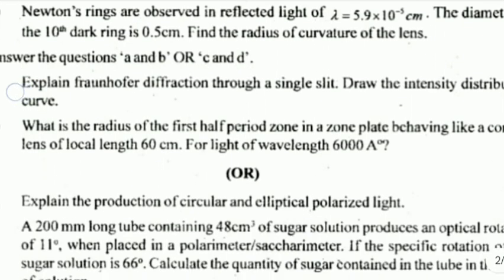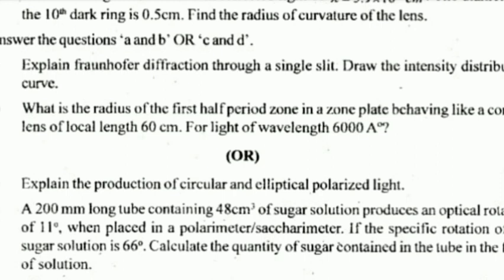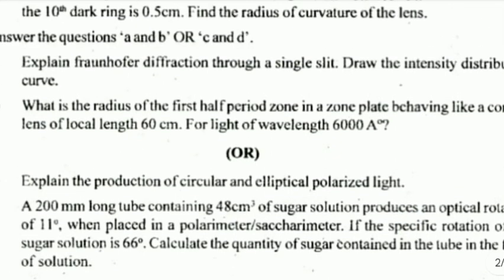Or: C) Explain the production of circular and elliptical polarized light. D) A 200 mm long tube containing 48 cm³ of sugar solution produces an optical rotation of 11 degrees when placed in a polarimeter. If the specific rotation of the sugar solution is 66 degrees, calculate the quantity of sugar contained in the tube in the form of solution. (4 marks)